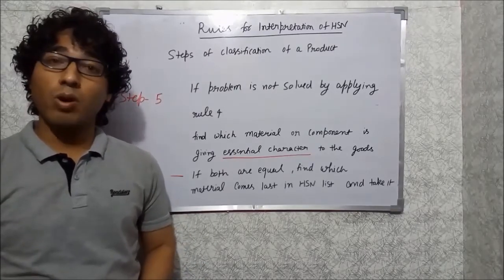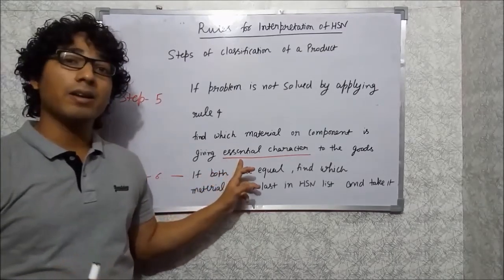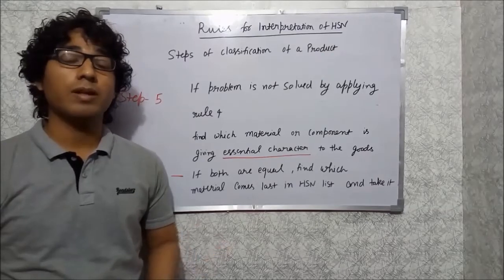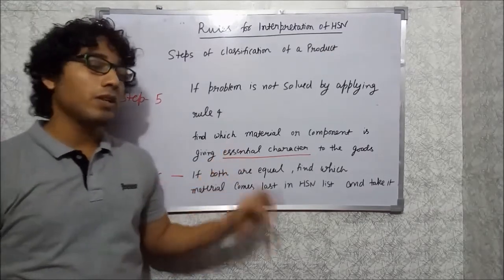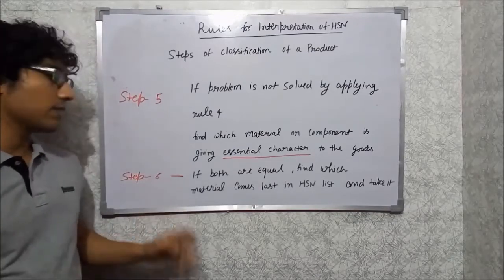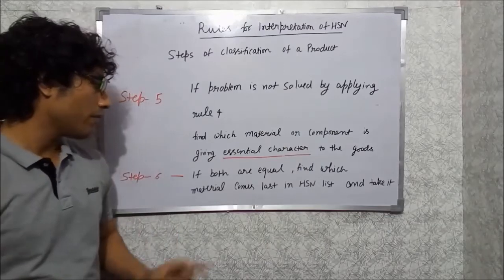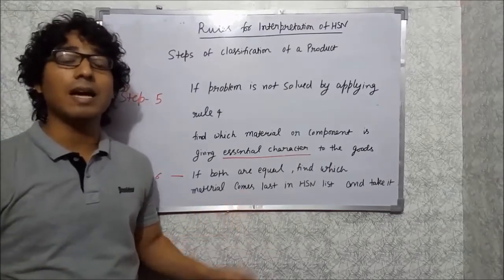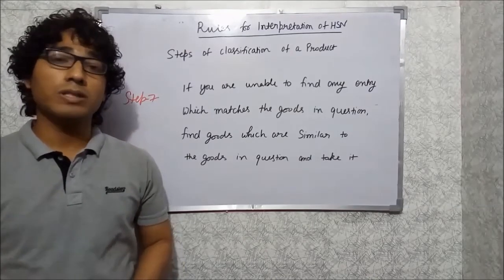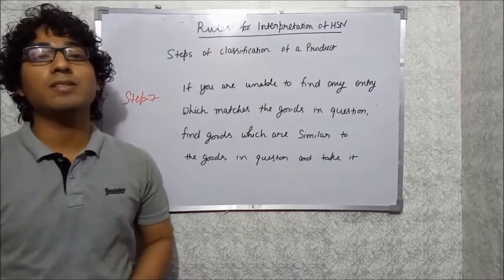Rule 5 says that if the problem is not solved by Rule 4, find out which material or component gives the essential character to the goods in question and classify accordingly. Rule 6 says that if both material and component give the essential characteristics, find out which comes last in the HSN list and use that. Rule 7 says that if you are unable to find any entry matching your goods, find similar goods and classify your goods on the basis of that similar entry.